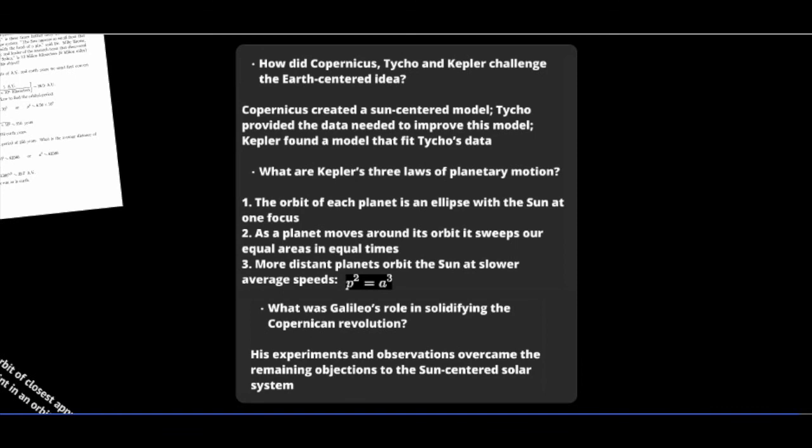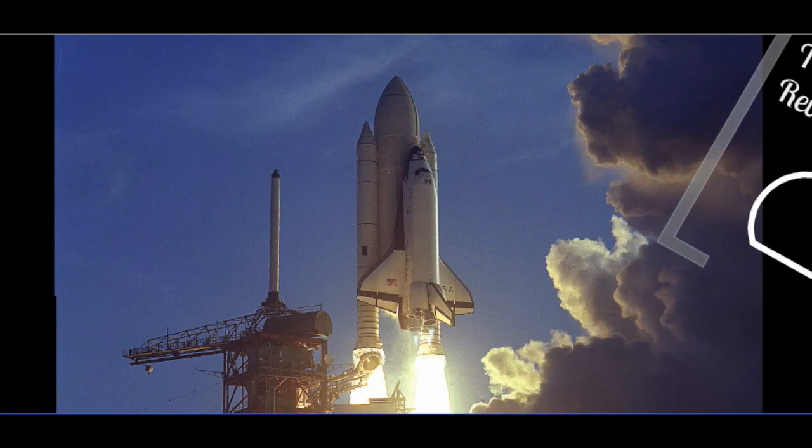Copernicus, Tycho Brahe, and Kepler challenged Ptolemy's idea of an Earth-centered solar system. Kepler developed three laws of planetary motion. The orbit of each planet is an ellipse with the sun at one focus. As a planet moves around its orbit, it sweeps out equal areas in equal times. And the more distant the planet is, the slower it orbits the sun. Galileo was able to solidify these ideas by overturning some of the Aristotelian views.